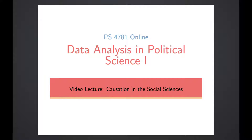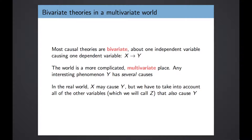Hello and welcome. In the next few lectures we're going to be talking about doing causal inference and when and how we can make causal claims about the relationships between the variables that we're studying. Most of our causal theories involve the relationship between two variables — how an independent variable x causes a dependent variable y. These are called bivariate theories because they are strictly about the relationship between two variables.